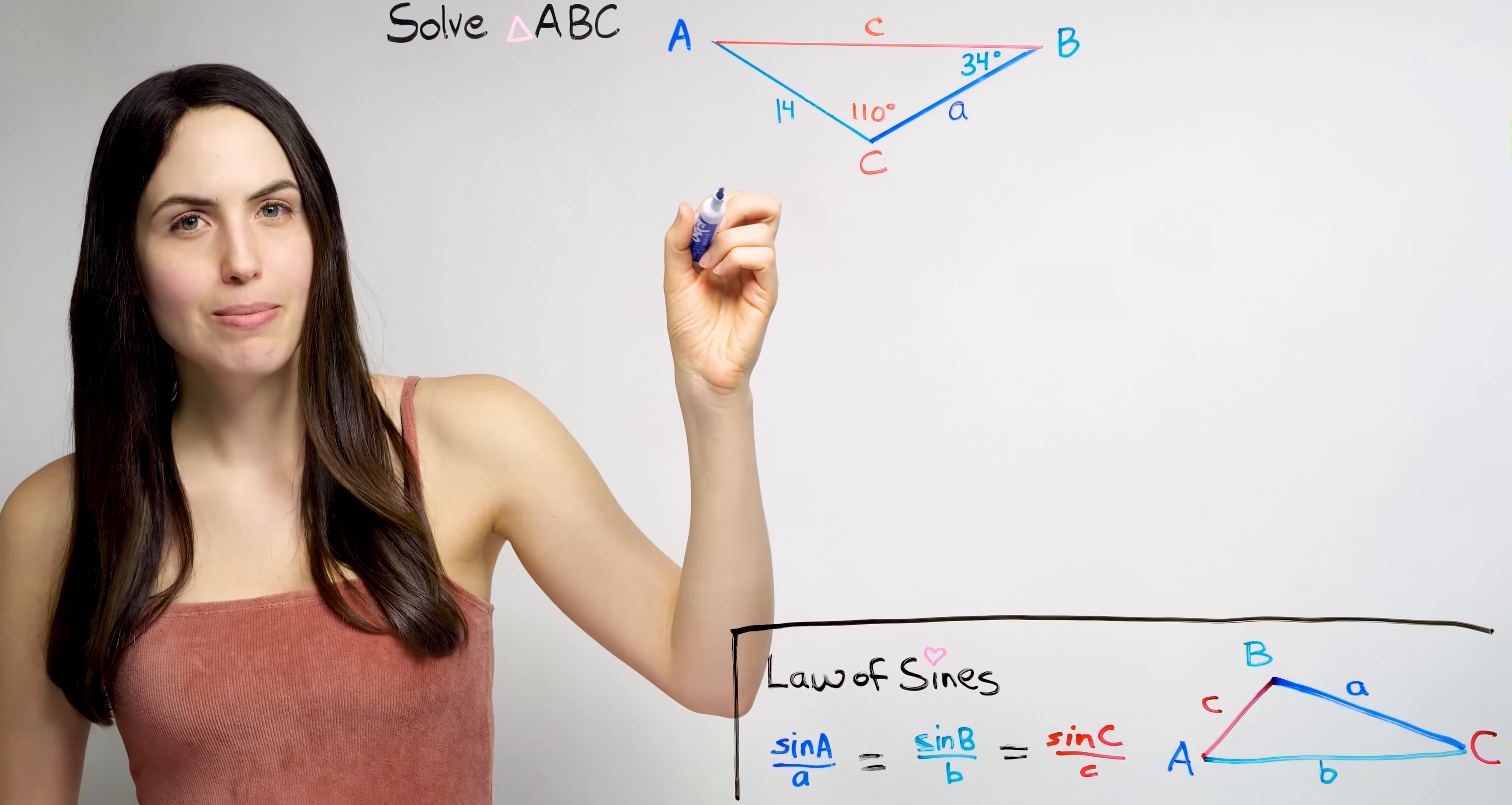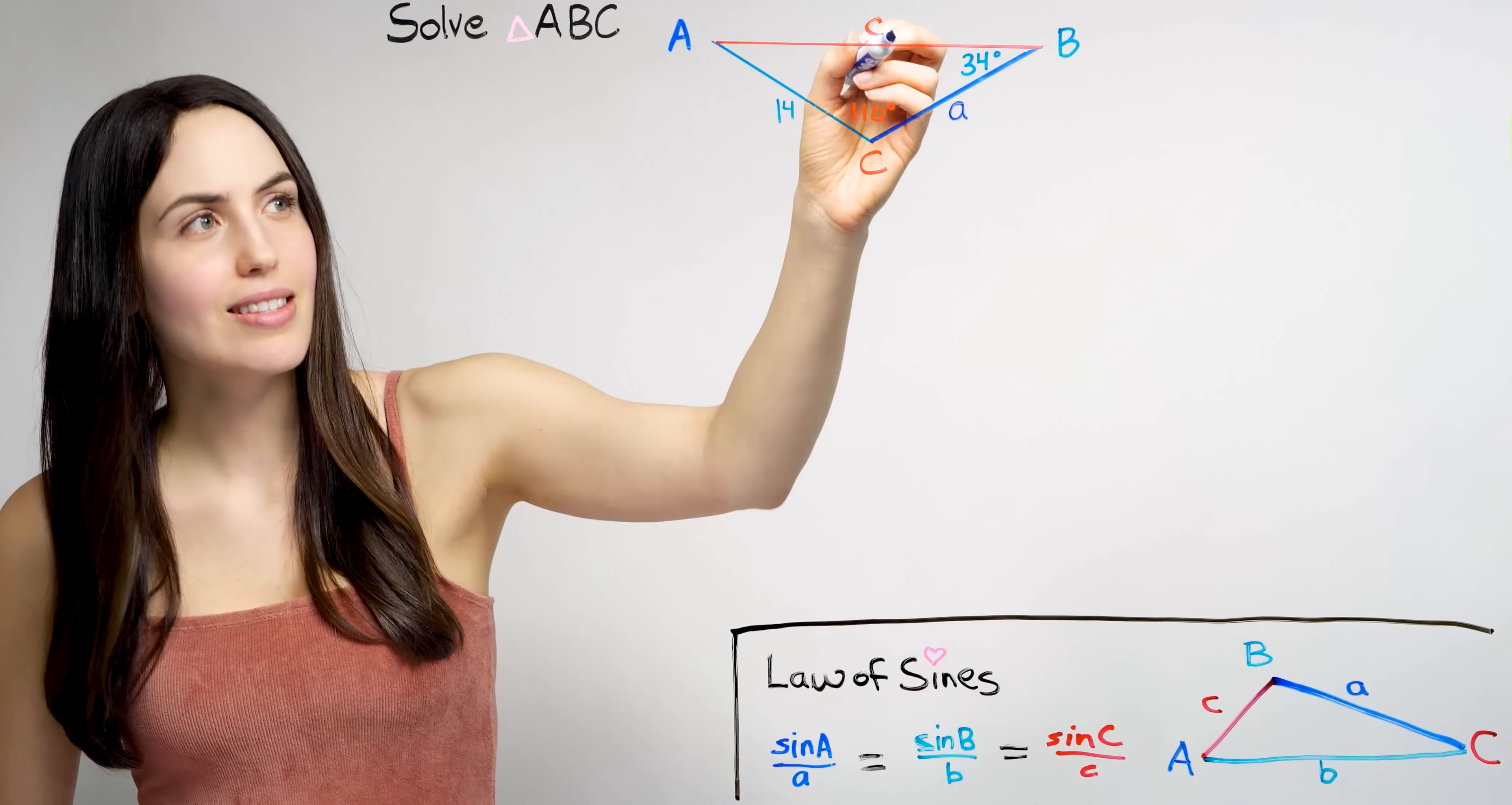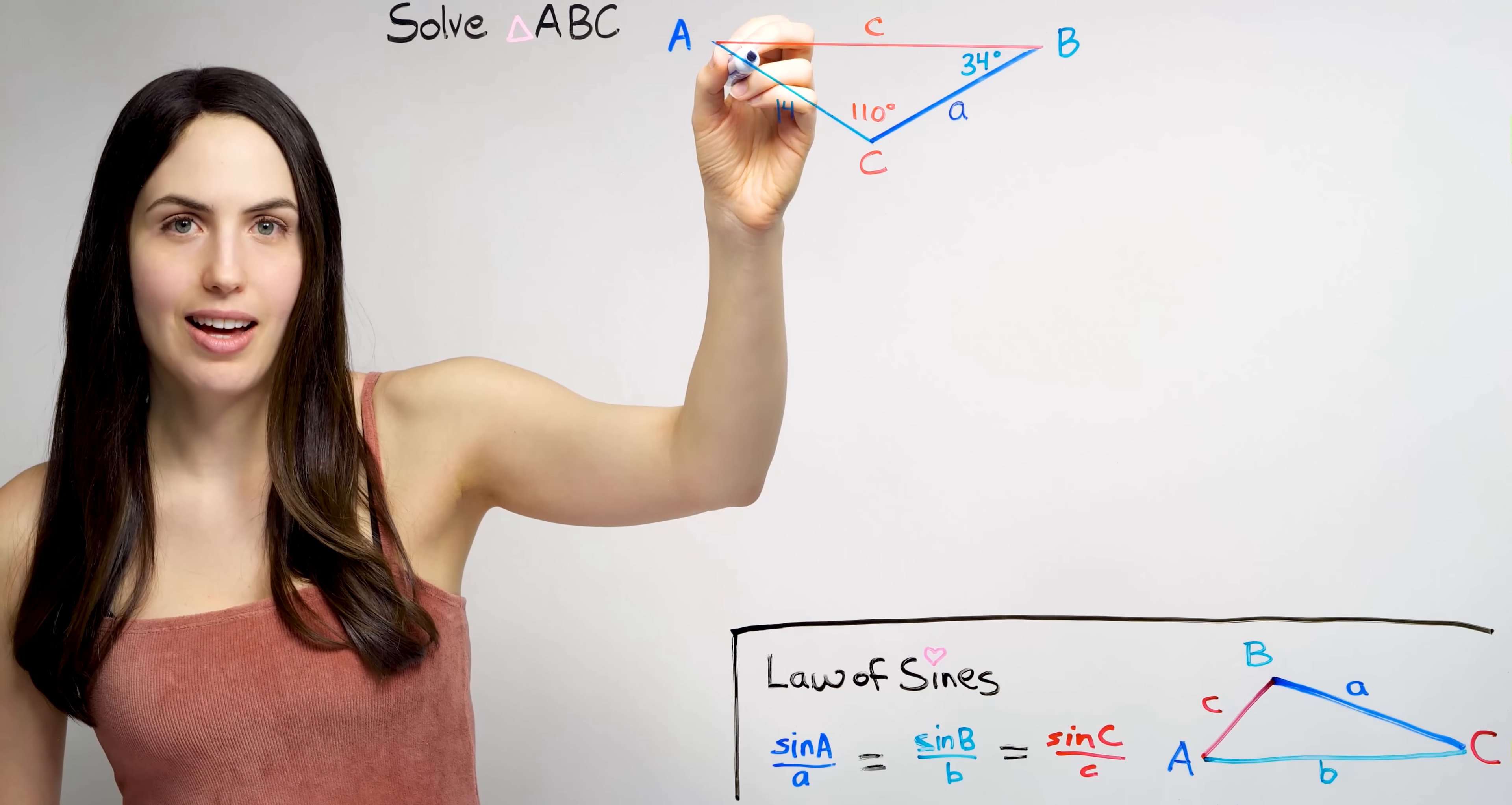So let's use it to solve. Here in this triangle, what's missing, what we're looking for, is side A, side C. We also don't know this third angle, angle A.